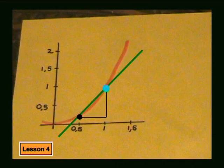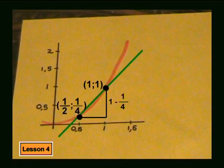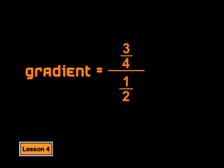MacGyver, have you done what I asked? I sure did. Would you mind doing that calculation for us? Not at all — it's easy. This point here is (1,1) and this one is (½, ¼), since the function is y equals x squared, so ½ squared is ¼. To determine the gradient, I must calculate the vertical change and the horizontal change. The vertical change is 1 minus ¼, which equals ¾. The horizontal change is 1 minus ½, which equals ½. This gives the gradient as ¾ divided by ½, which equals 3/2, or one and a half.